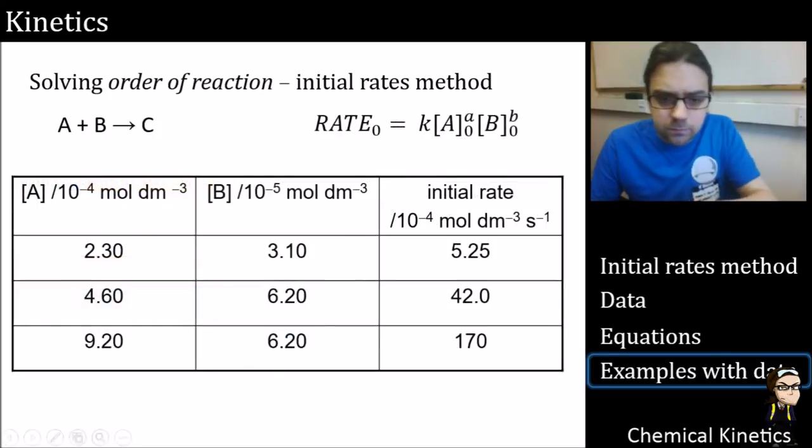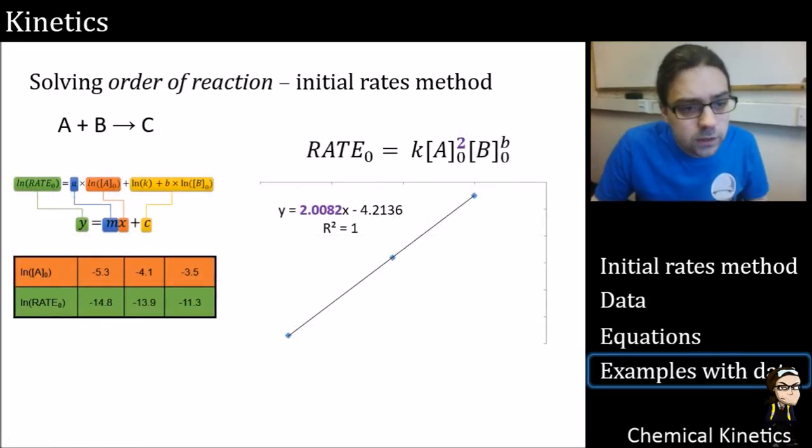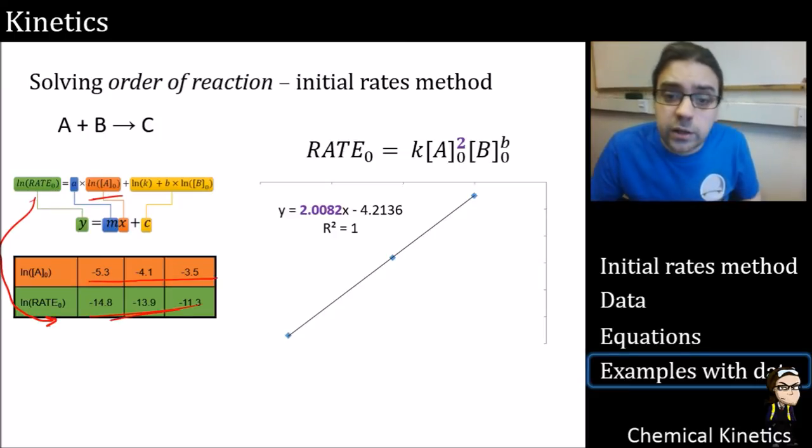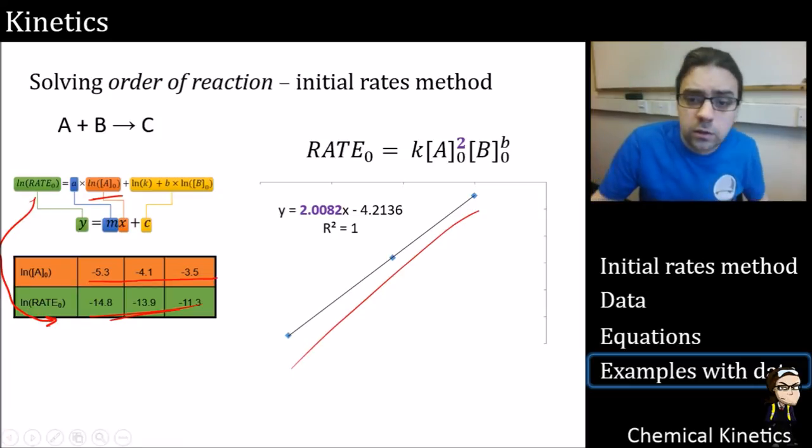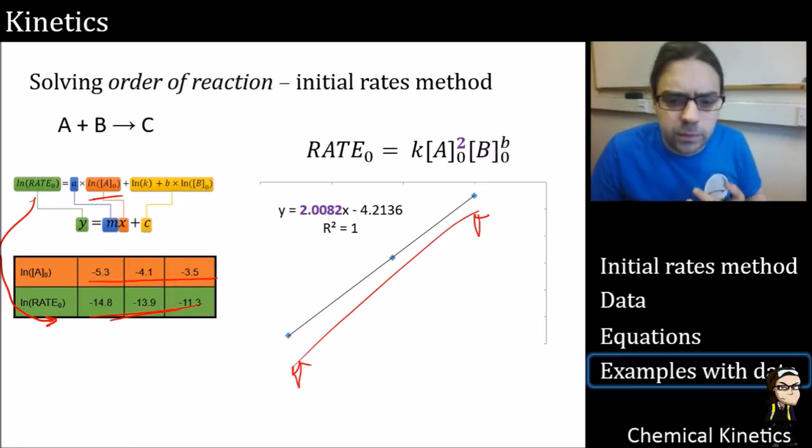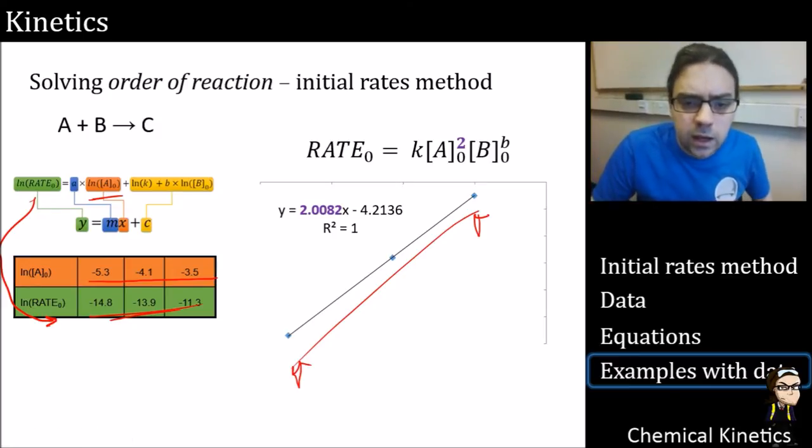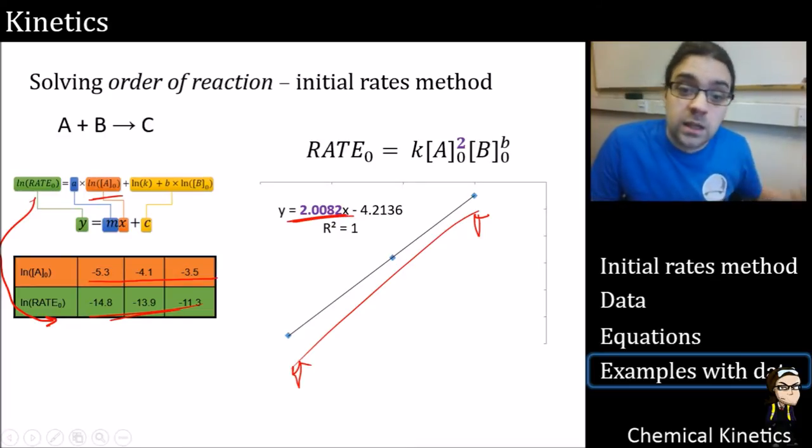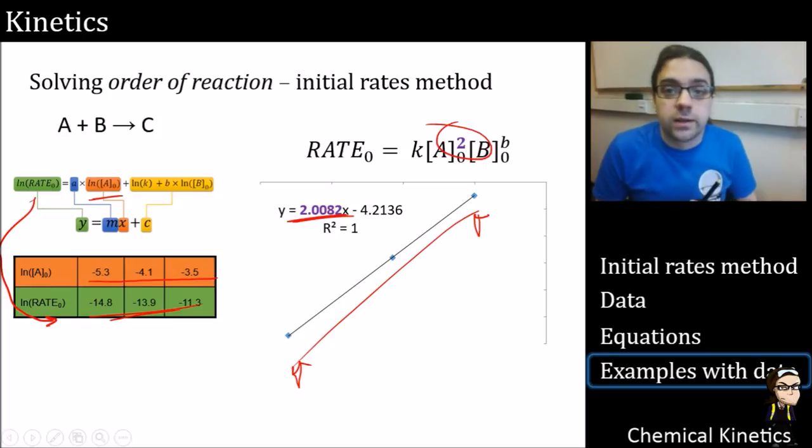Let's have a look at the actual data here. Here are our x values, here are our y values. If we actually plot these, we get a straight line. I did this in Excel. You can do whatever you like. Learn how to use Excel, it's a really powerful tool for this sort of thing. And the gradient, when we actually work it out, is 2.0082, pretty much close to 2. It rounds off quite nicely. Within experimental error, we can get what is our rate law.